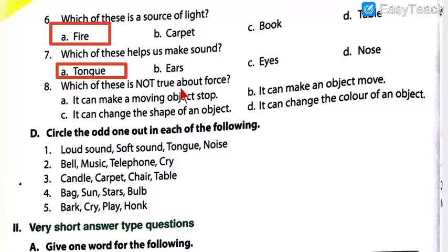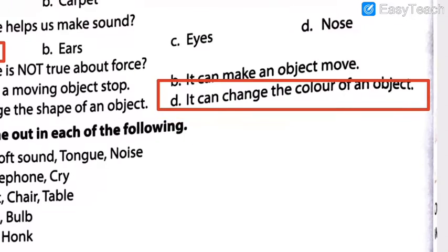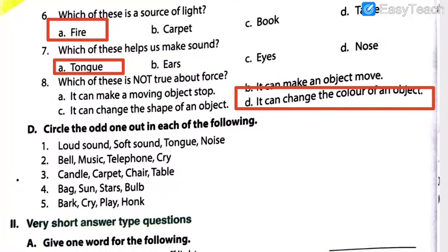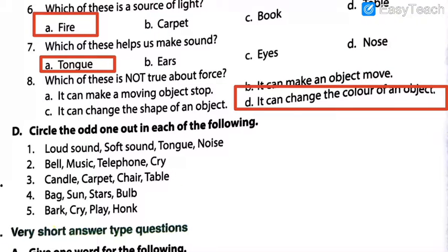Number eight: which of these is not true about force? Options: it can make a moving object stop; it can make an object move; it can change the shape of an object; or it can change the color of an object. Option D is correct - force cannot change the color of an object. Force can stop a moving object, make an object move, and change the shape of an object, but color cannot be changed using force.